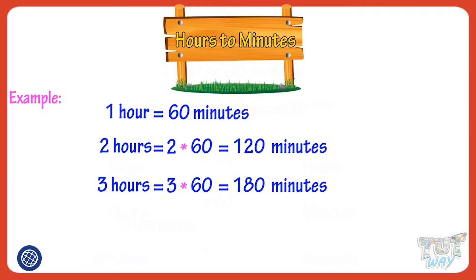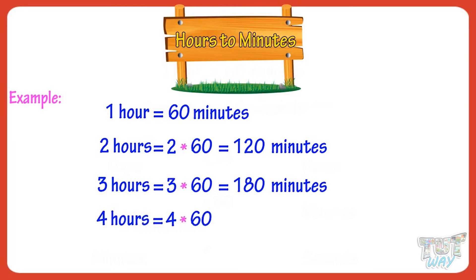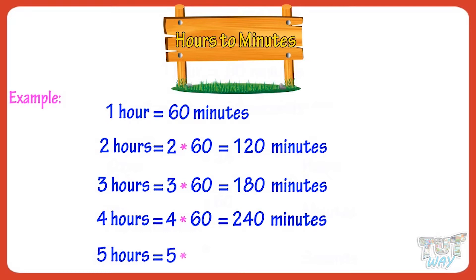So kids, for converting hours to minutes, you multiply the hours with 60. Now let's see more examples. Four hours equals 4 multiplied by 60, equals 240 minutes. Five hours equals 5 multiplied by 60, equals 300 minutes.